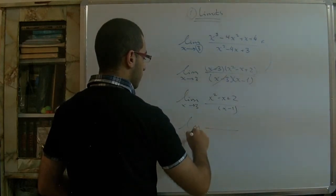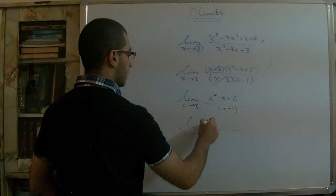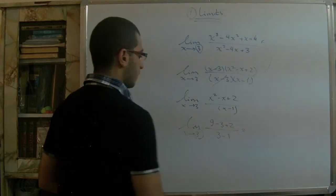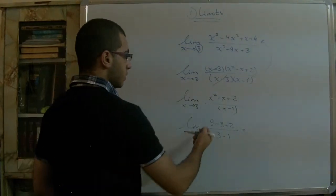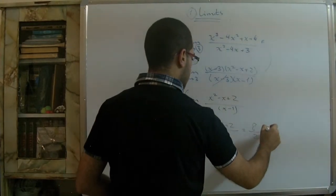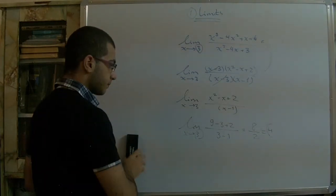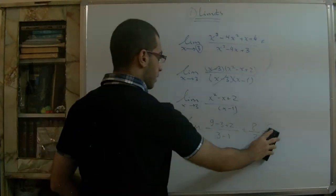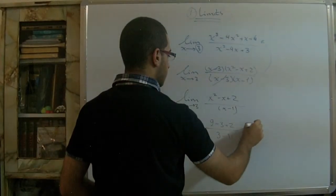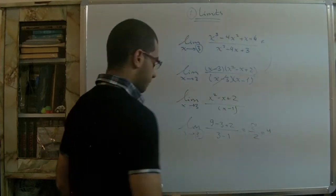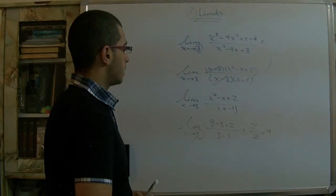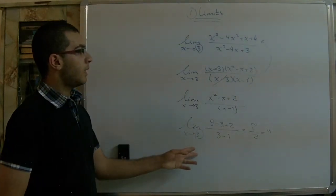The (x − 3) factors cancel. Substituting x = 3 into (x² − x + 2) over (x − 1) gives 9 − 3 + 2 over 3 − 1, which equals 8 over 2, giving a final answer of 4.